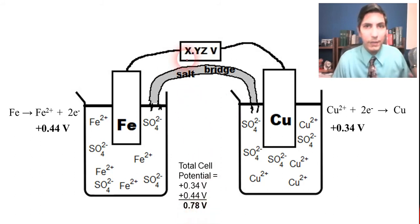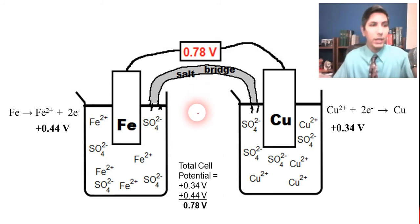And so if you have a volt meter, maybe a digital volt meter, or even an analog one, it's going to light up with the voltage. It should say 0.78 volts if everything is done correctly, assuming we're at standard conditions - one molar concentration for everything and 25 degrees Celsius and so forth, that's going to be the potential difference, 0.78 volts.